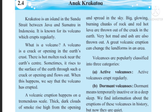A volcanic eruption happens on a tremendous scale. Thick, dark clouds of smoke rise high from the opening and spread in the sky. Big, glowing, burning chunks of rock — kindly underline the word 'chunk' — and red-hot lava are thrown out of the crack in the earth. Very hot mud and ash are also thrown out. A great volcanic eruption can change the landforms in an area.